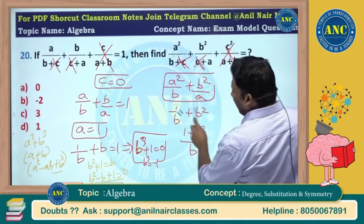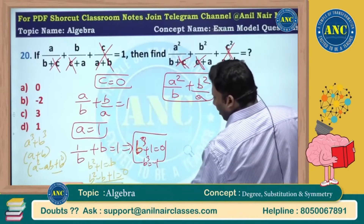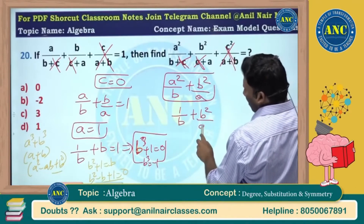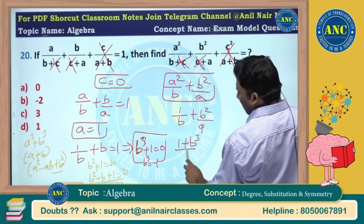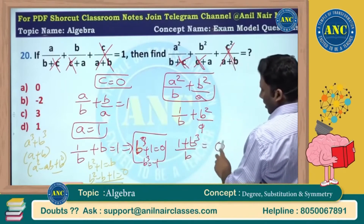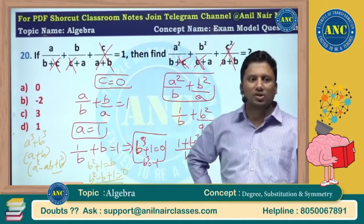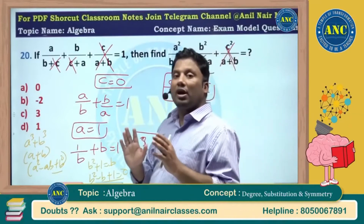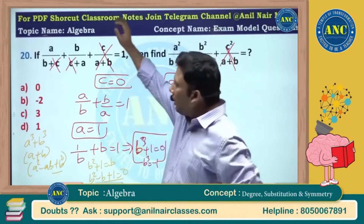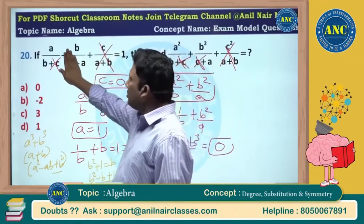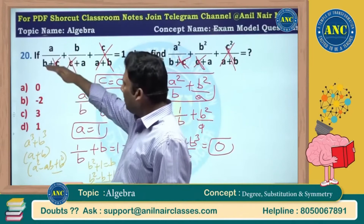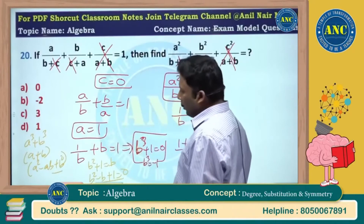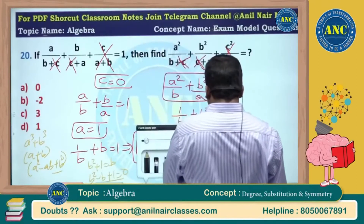With a = 1, we get 1/b + b² / 1. This becomes (1 + b³) / b. Since b³ = -1, we get (1 - 1) / b = 0. The answer is 0. The method is: make c = 0, then a/b + b/a = 1, make the denominator 1, so 1/b + b = 1.